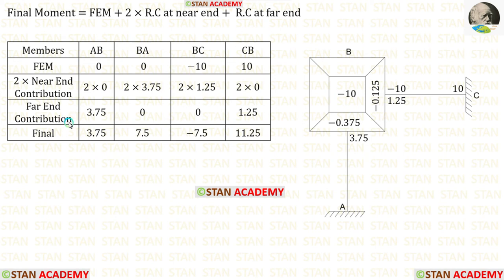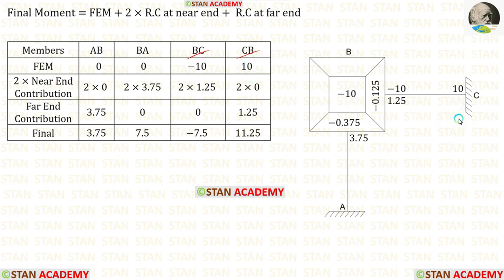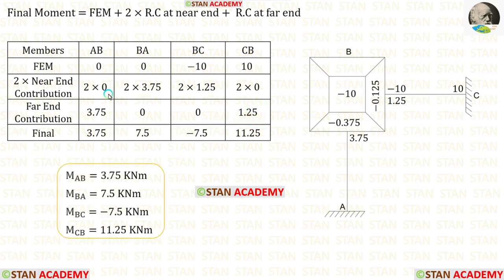Now let us enter the far end rotation contributions. For AB, the far end is BA with contribution 3.75. For BA, the far end is AB with contribution 0. For BC, the far end is CB with contribution 0. For CB, the far end is BC with contribution 1.25. Now let us find the final moments by adding these three values. After adding, we are getting the final moments.